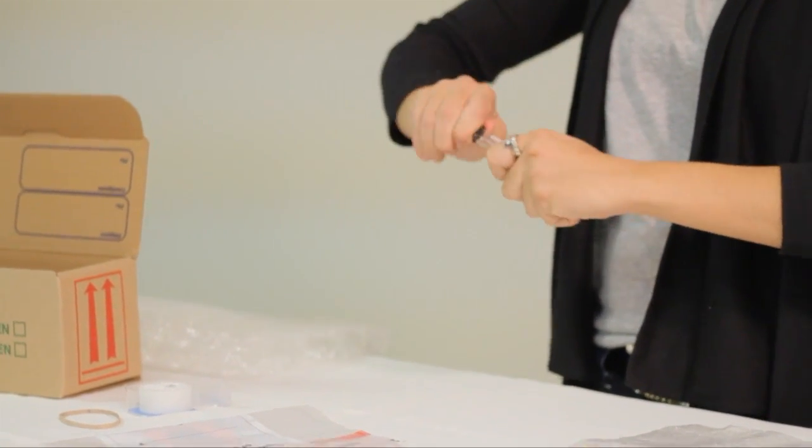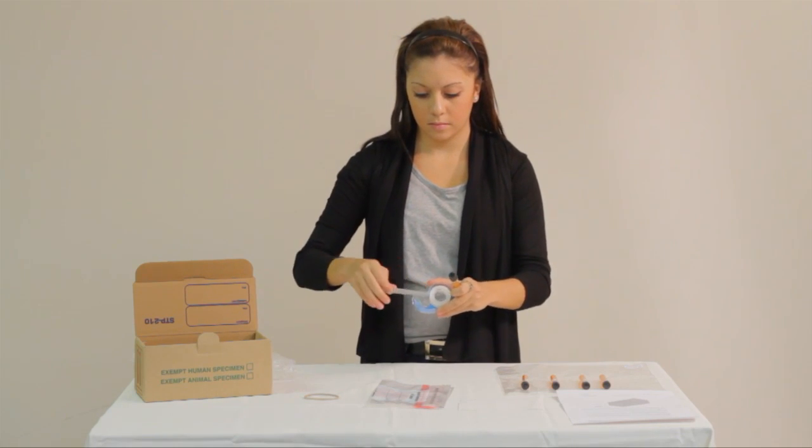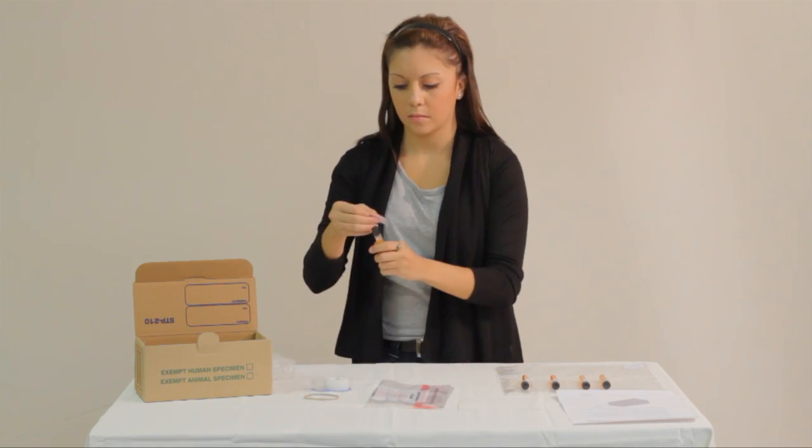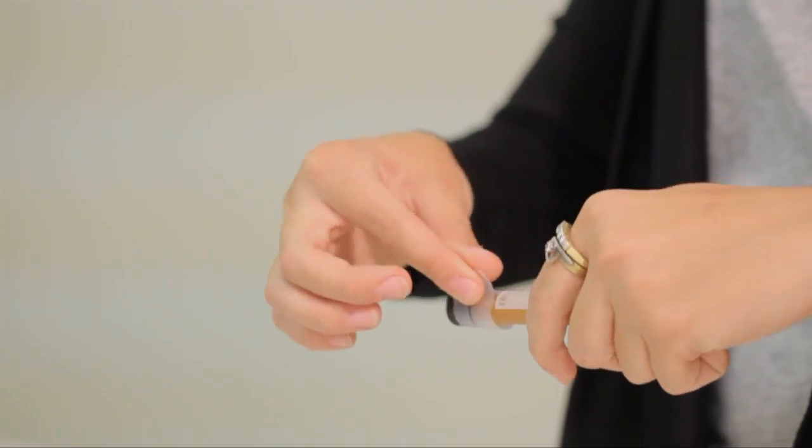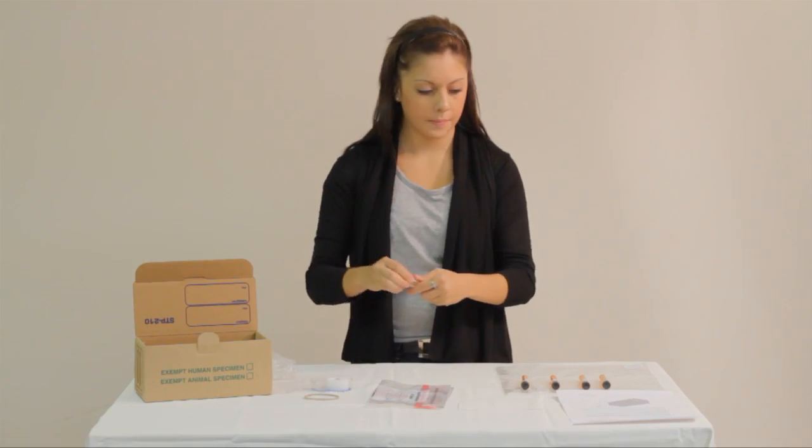Ensure that the primary container is leak-proof. Since the package may be subjected to vibrations during transport, it is recommended that the closures of primary receptacles containing liquids are secured with tape or other positive means.